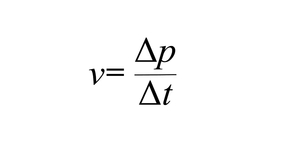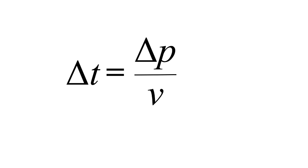We could also rearrange our equation to tell us who arrived at a particular point more quickly. In our 100-meter race, the displacement was 100 meters for both runners, which goes in the numerator. Remember, a larger denominator gives a smaller value on the left-hand side, so the person with the greater velocity for the same displacement will arrive at their destination sooner.